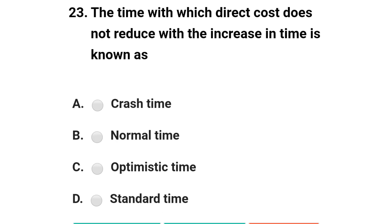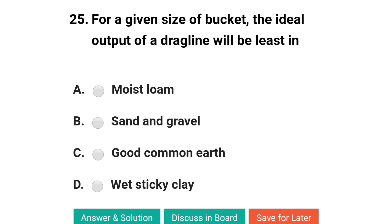Next question: the time with which direct cost does not reduce with the increase in time is known as — option A: crash time; option B: normal time; option C: optimistic time; option D: standard time. The correct answer is option B: normal time.